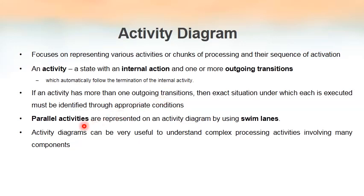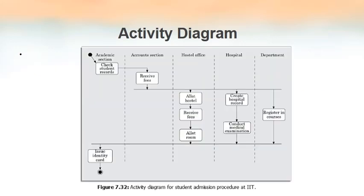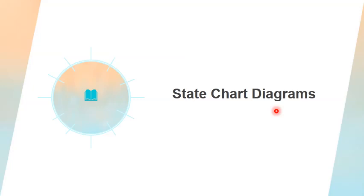We use activity diagrams when our process is a complex one. Here is an example of an activity diagram for the student admission procedure at IITs. As you can see, there are swim lanes — this vertical track-like structure — lanes one through five. The hostel office and hospital are both working in parallel, so we represent those parallel activities using swim lanes. This entire picture represents how student admission takes place in IITs.